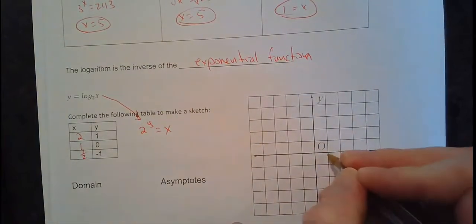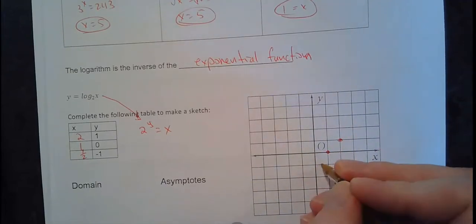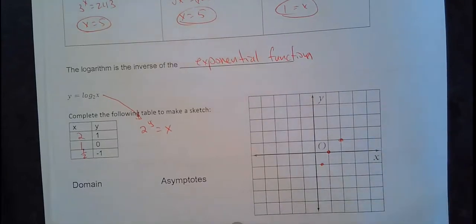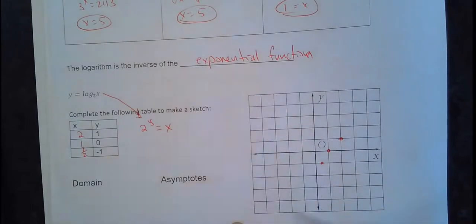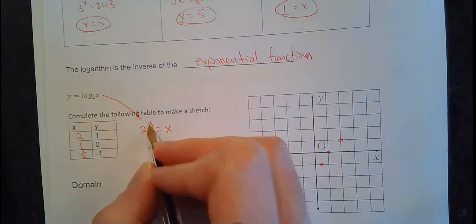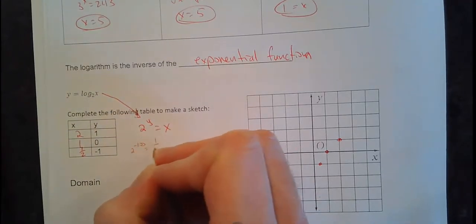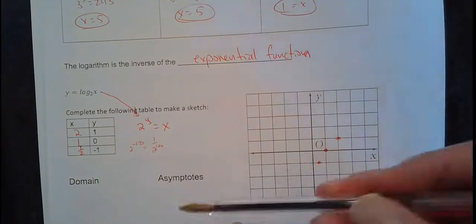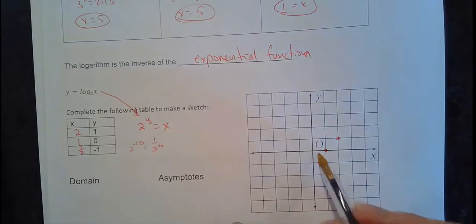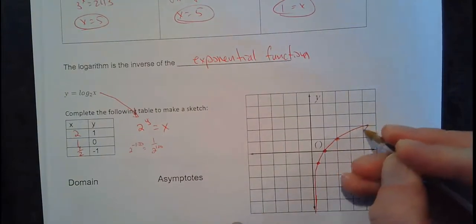If you plot these points — (2, 1), (1, 0), and (1/2, -1) — you can see this curve. If I keep plugging in bigger and bigger negative y's, my x's will still not be negative. If I plug in a really small y like negative 100, well 2 to the negative 100 is 1 over 2 to the 100, which is still positive. So even way down off the graph, I'm still in the positive area — I can never get to the negative. None of this is in the domain of a logarithm unless you have a shift left.